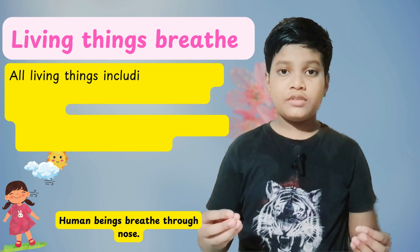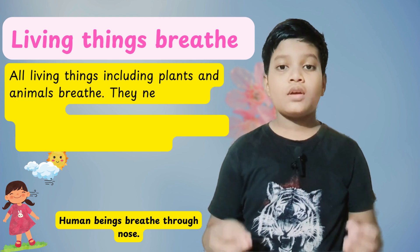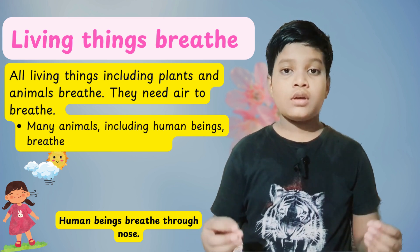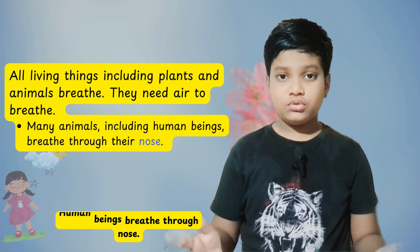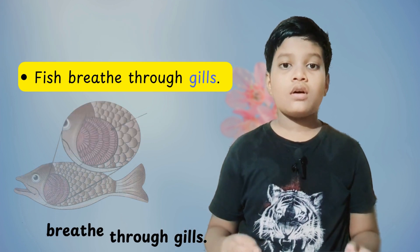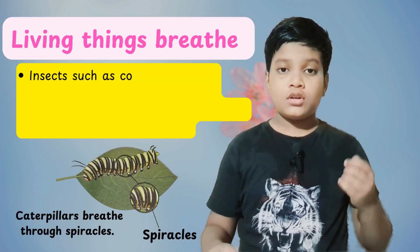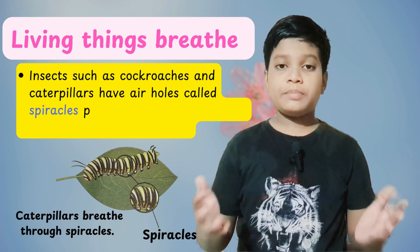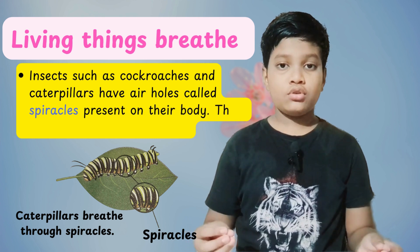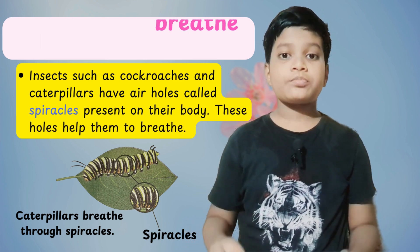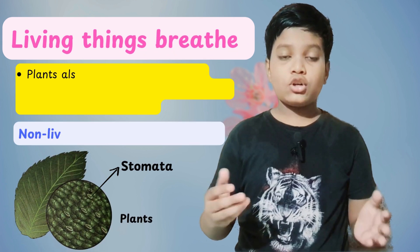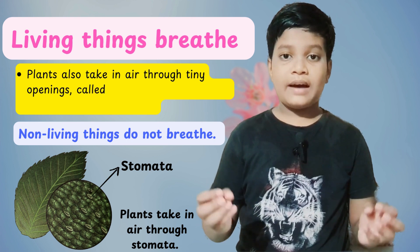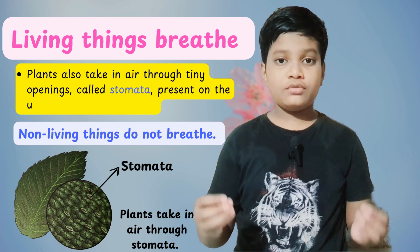Living things breathe. All living things including plants and animals breathe; they need air to breathe. All animals including humans breathe through their nose. Fish breathe through gills. Insects such as cockroaches and caterpillars have air holes called spiracles on their body. These holes help them to breathe. Plants also take in air through tiny holes called stomata present on the underside of the leaves.